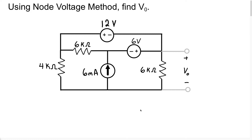In this video, we're going to use the node voltage method to find the voltage VO, which is the voltage across this 6K resistor. We're going to label our essential nodes. This is going to be node 1, this is node 2, this is node 3, and we have one more essential node at the bottom which we'll take as our reference node.